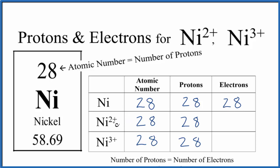For Ni2+, this 2+ means we've lost two negative charges. We've lost two electrons. So we just take 28 minus the two electrons. We get 26 electrons for Ni2+. For Ni3+, we have 25 electrons.